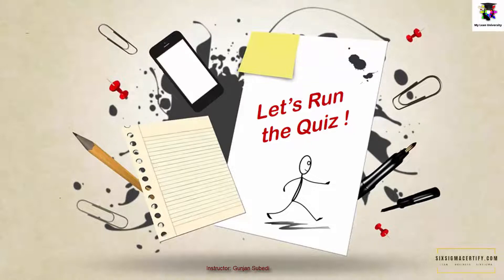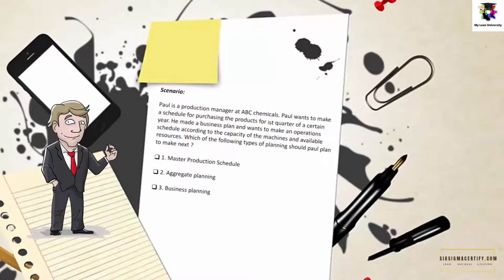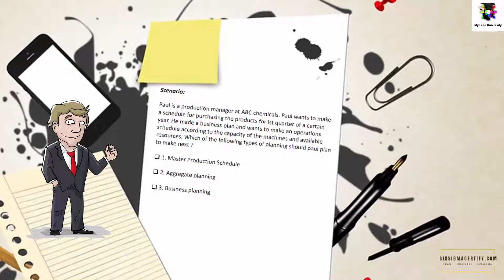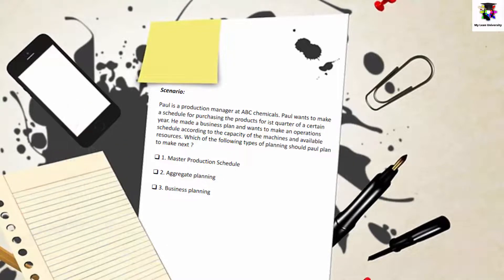So without delay, let's start the second session and run the quiz. The first scenario is: Paul is a production manager at ABC Chemicals. Paul wants to make a schedule for purchasing products for the first quarter of a certain year. He has made a business plan and wants to make an operations schedule according to the capacity of machines and available resources. Which type of planning should Paul make next: master production schedule, aggregate planning, or business planning? Take a moment to think — you can pause the video now.